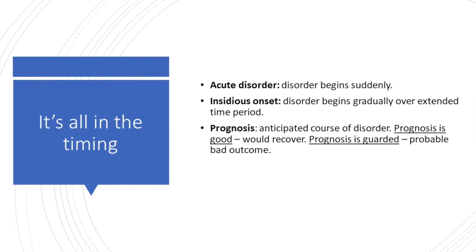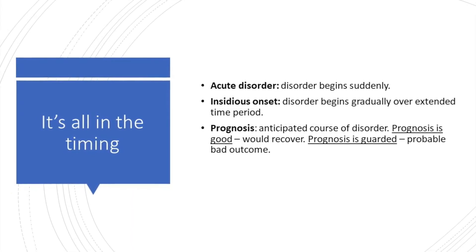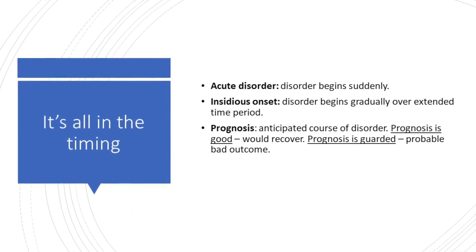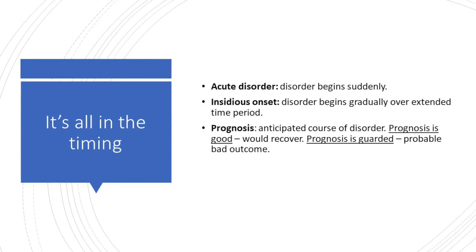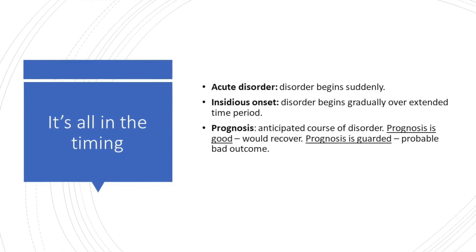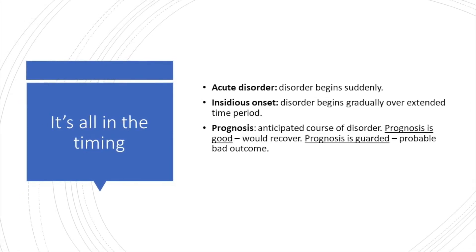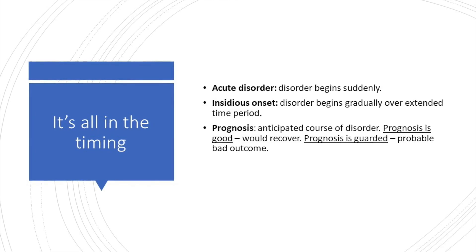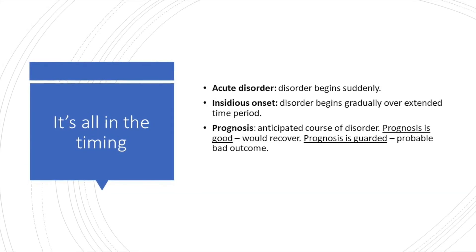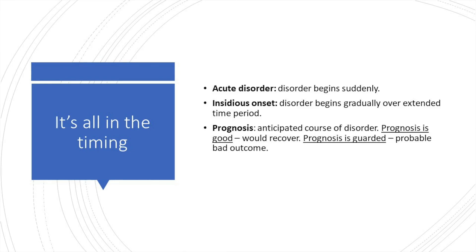Prognosis is given by the clinician, whereby they anticipate a course of a disorder. If the prognosis is good, then the individual is likely to recover. However, if the prognosis is guarded, this is probably indicative of a bad outcome.